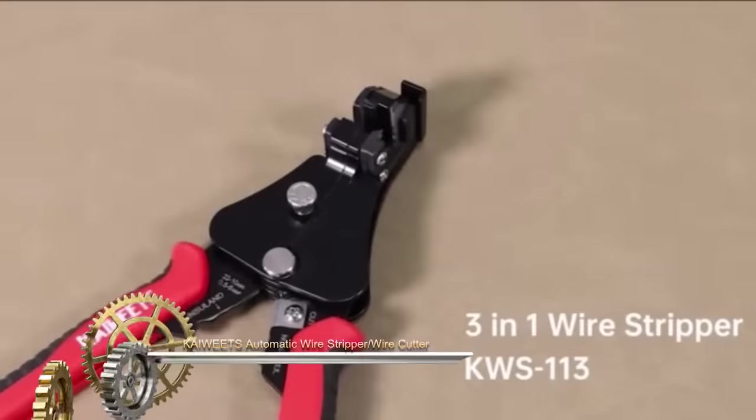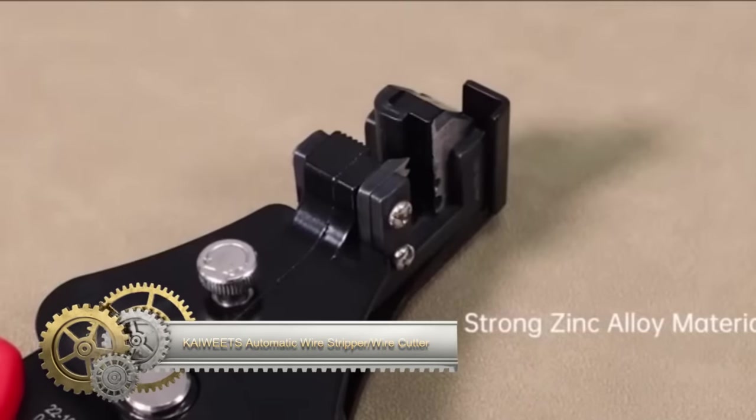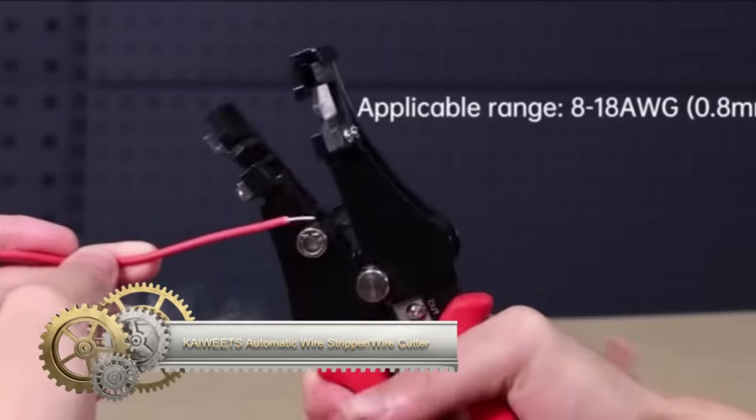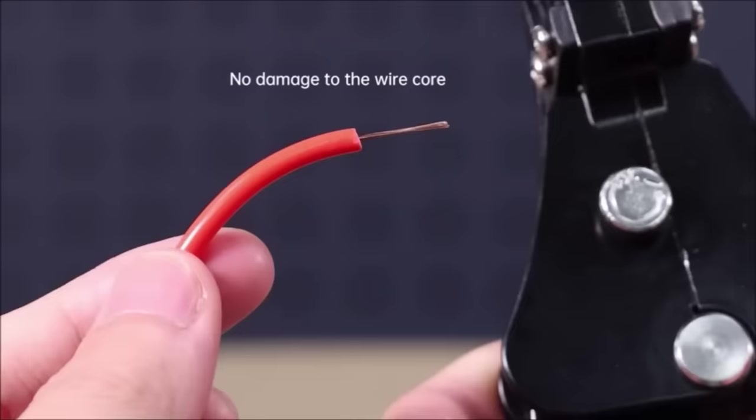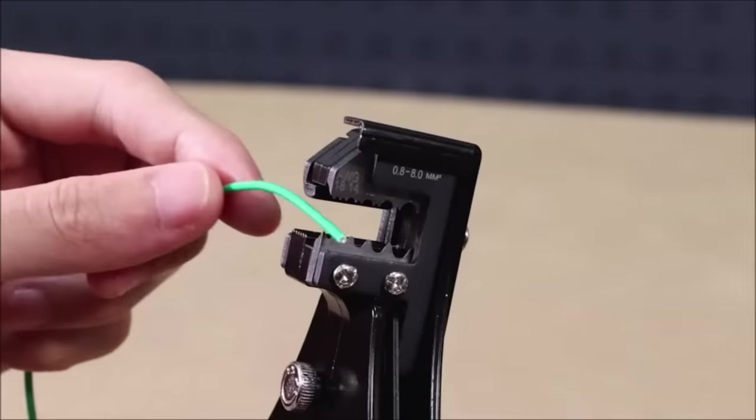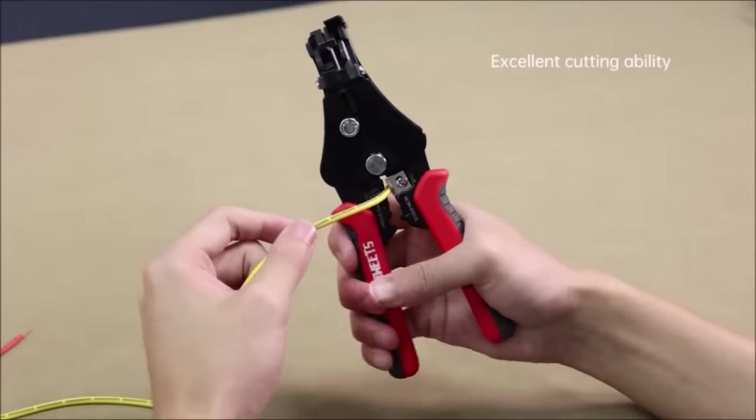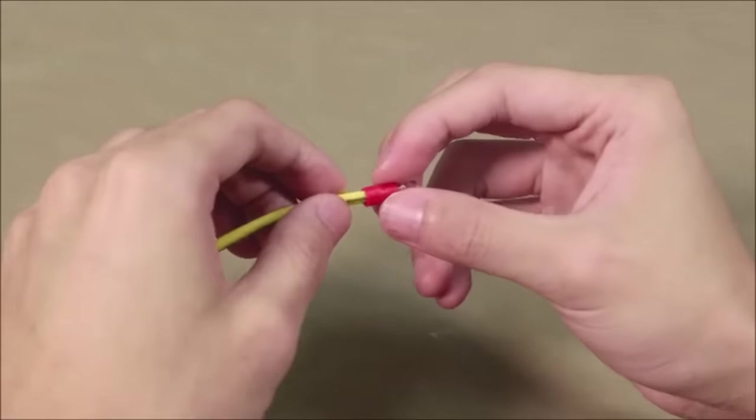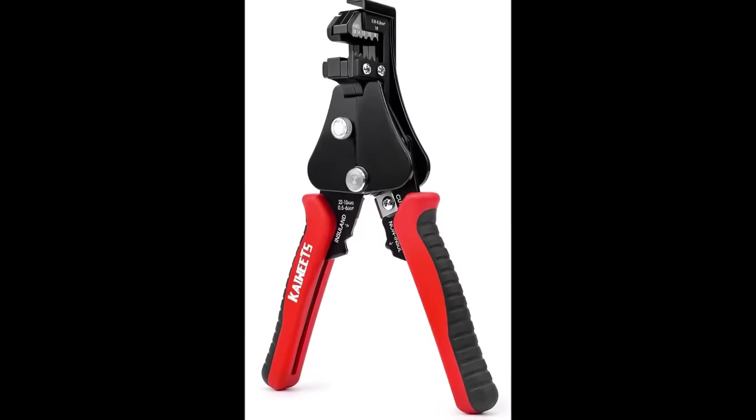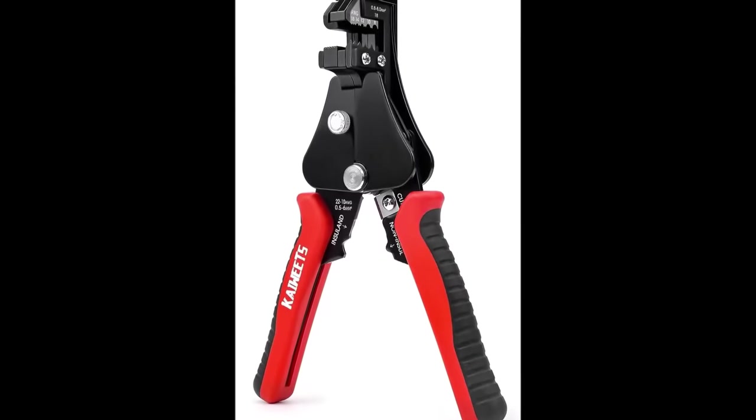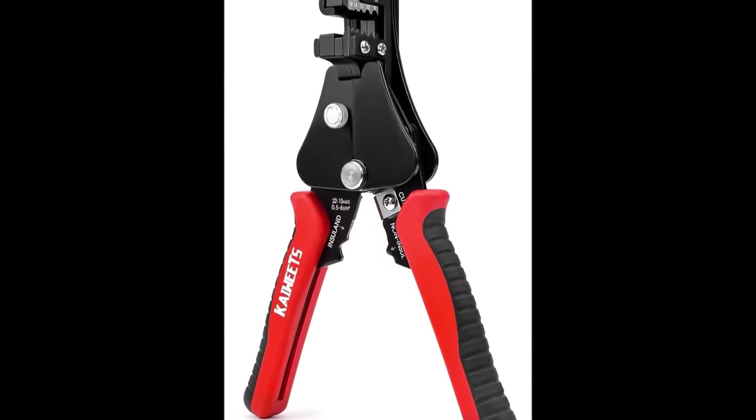The Kai Wheats Automatic Wire Stripper Wire Cutter is a versatile and adjustable tool suitable for stripping, cutting, and crimping electrical wires. It accommodates 8 to 18 AWG solid and stranded electrical wire for stripping and includes a 10 to 22 AWG wire crimping capability. This wire stripper boasts a self-adjusting mechanism, automatically adapting to the wire size, ensuring ease of use.